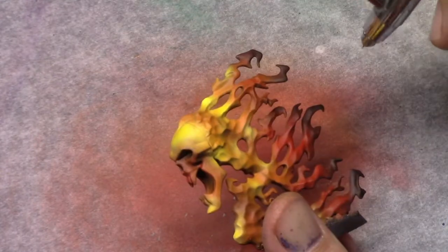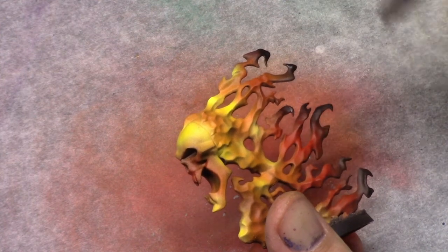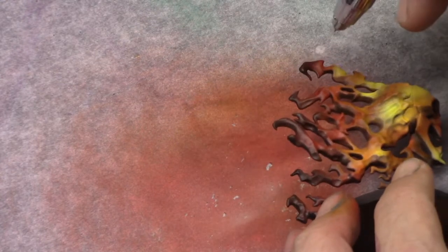And as a final part I use black. On the tip of the flames and at the back of the model I just paint those black. And also to make the skull a little bit more interesting at front, I just paint the eye sockets black, or at least the surrounding areas of the eye sockets.